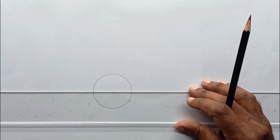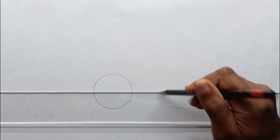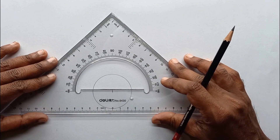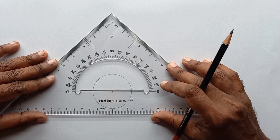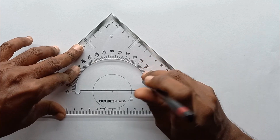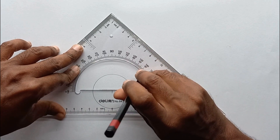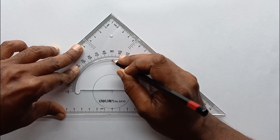Now I'm going to divide this circle into 12 segments. I'll draw a horizontal line and use the protractor to divide the circle into 12 equal segments, each at 30 degrees apart.